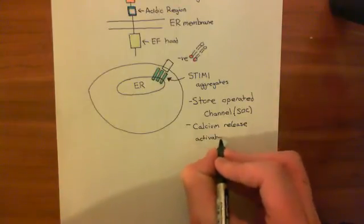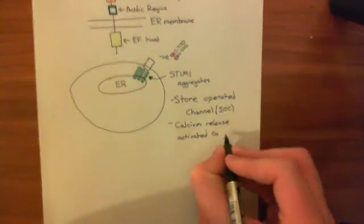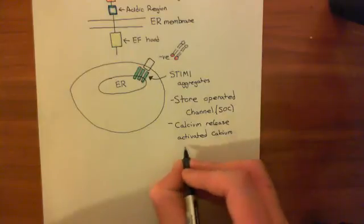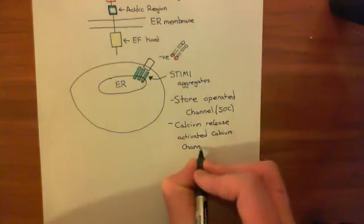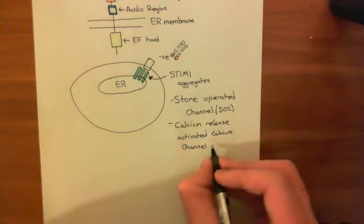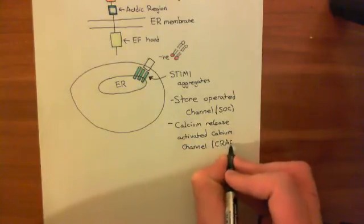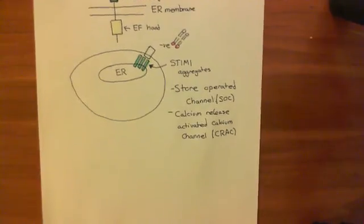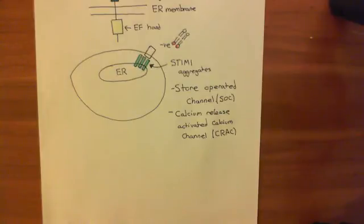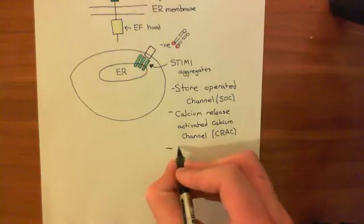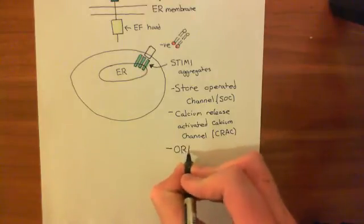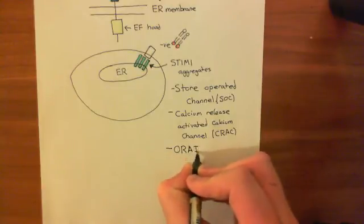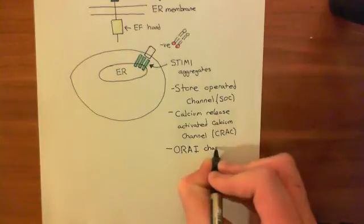Calcium-release-activated calcium channel can be abbreviated to CRAC. Both 'store-operated channel' and 'calcium-release-activated calcium channel' were names used prior to knowing what the channel actually was. Now that we know what this channel is, it is often referred to as the Orai-1 channel, named after the proteins which make it up.